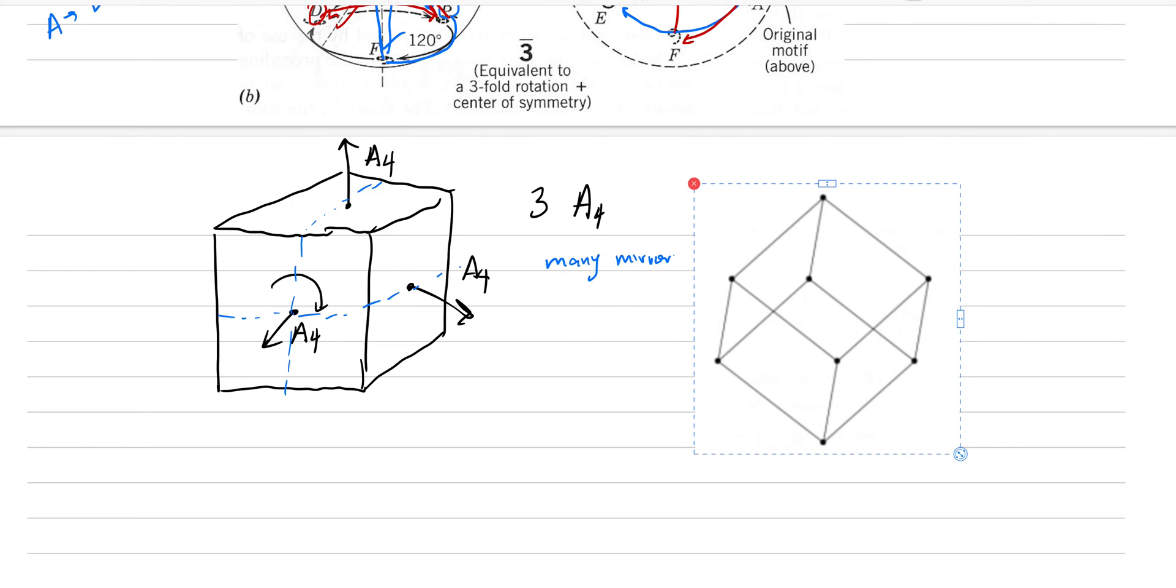If you'd like to, pause this right now and draw this wireframe version of a cube. If we draw the cube like this and we have our axis come out of this corner, then what we have is face A. Where is face B? We can find it through a rotoinversion, where we go around 120 degrees to this face right here, and then project through the center of symmetry, and that helps us find this face right here, which is B.